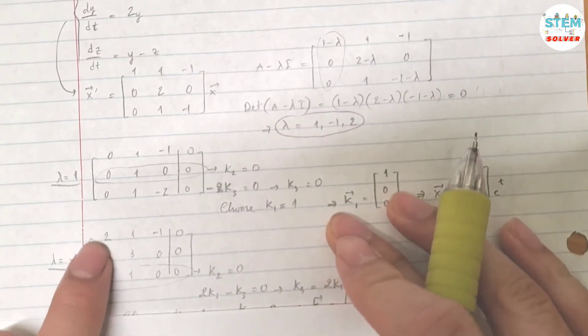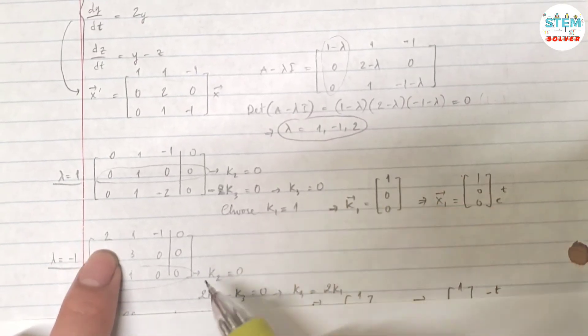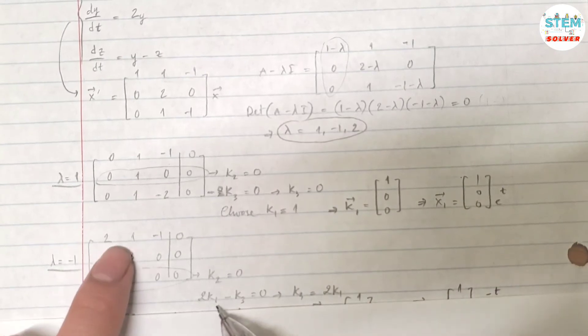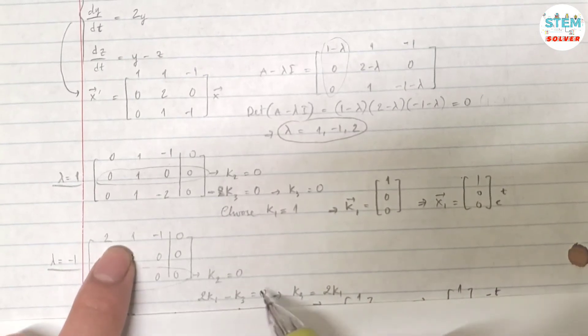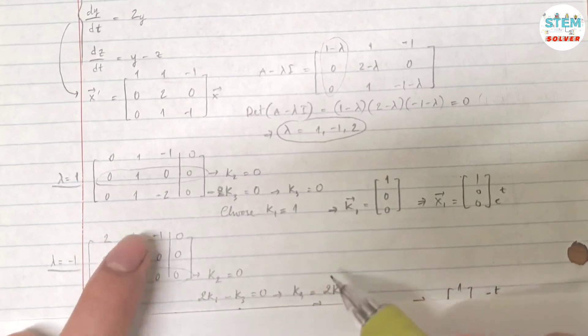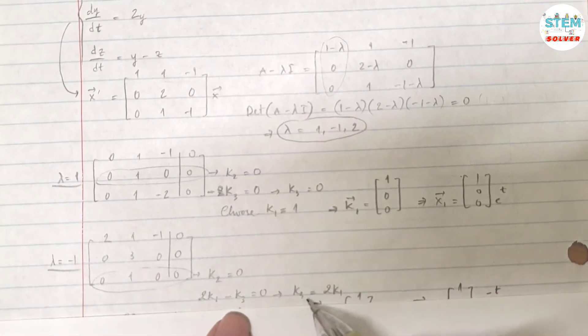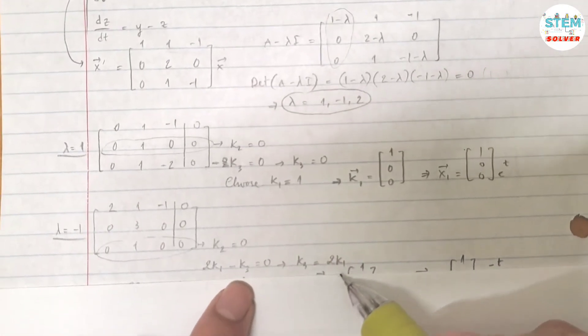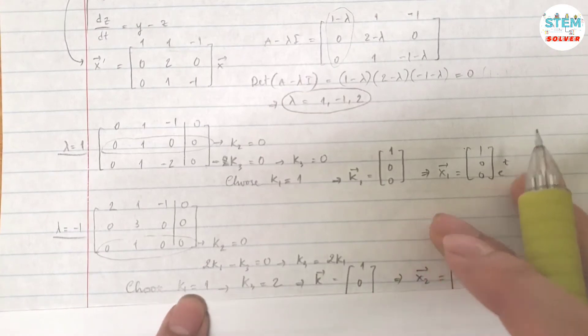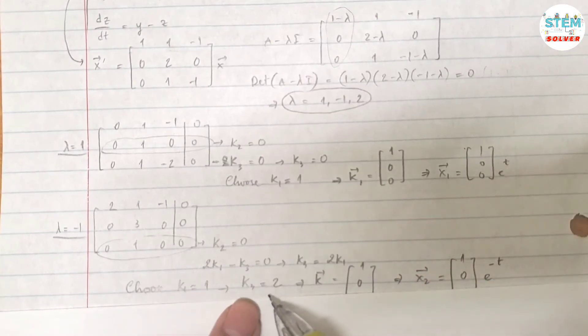And then if I use the first equation, I got 2k1 minus k3 equals 0, because k2 is 0, so just ignore it. Then I solve for k3, that gives me 2k1. So choose k1 equals 1, that gives me k3 equals 2. You can choose whatever value for k1 as long as it's not 0.